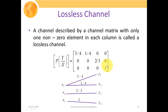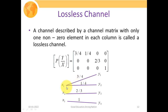Next is the lossless channel. As the name suggests, information will not get lost. A channel described by a channel matrix with only one nonzero element in each column is called a lossless channel. For example: transmitting X1 gives Y1 with probability 3/4 and Y2 with probability 1/4; transmitting X2 gives Y3 with probability 1/3; transmitting X3 gives Y4 with probability 1. This scenario is described by the corresponding channel matrix, which characterizes the lossless channel.